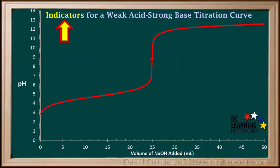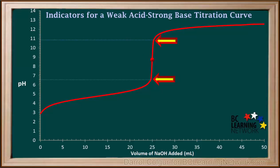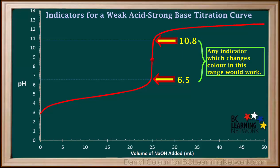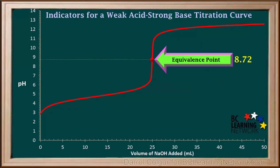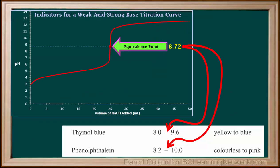When finding suitable indicators for a weak acid-strong base titration, we focus on the almost vertical section of the curve. In this example, the almost vertical section ranges between a pH of approximately 6.5 and 10.8, so any indicator which changes color within this pH range would work. However, to find the best indicator, we look at the pH right at the equivalence point. In this titration it's 8.72. The equivalence point of 8.72 is within the transition range of both thymol blue and phenolphthalein, so these two indicators would be best for this particular titration.